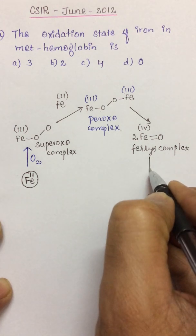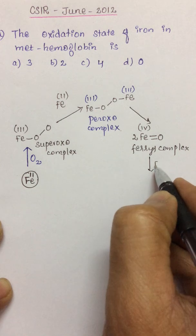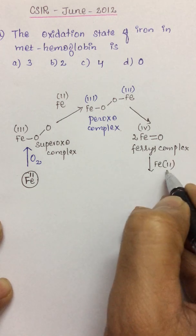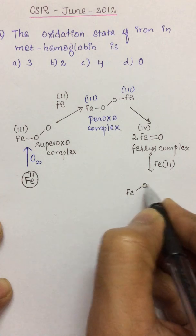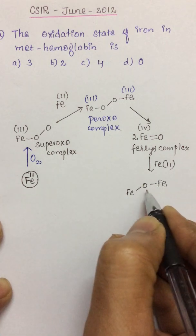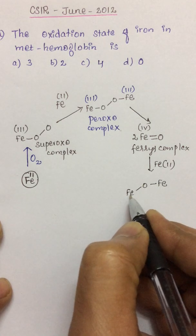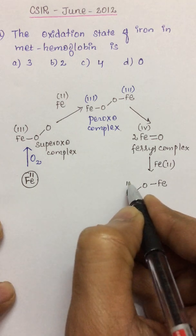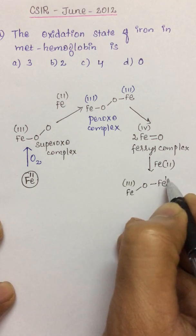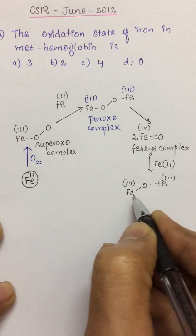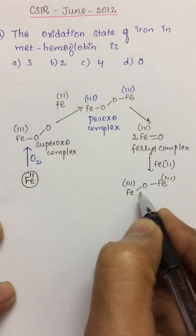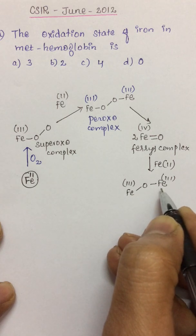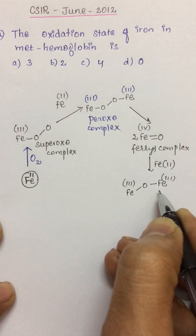So such a ferryl complex would react with another iron of a subunit where a complex is formed with a single oxygen being bound between two irons. And the oxidation state of two irons is found to be +3.